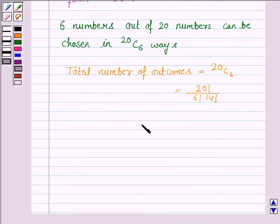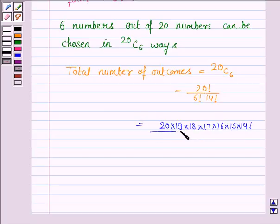Now simplifying this becomes 20 into 19 into 18 into 17 into 16 into 15 into 14 factorial, and 6 factorial is written as 6 into 5 into 4 into 3 into 2 into 1 into 14 factorial.